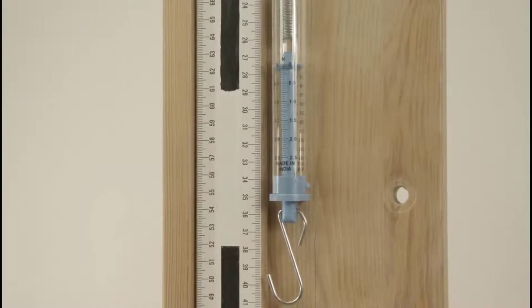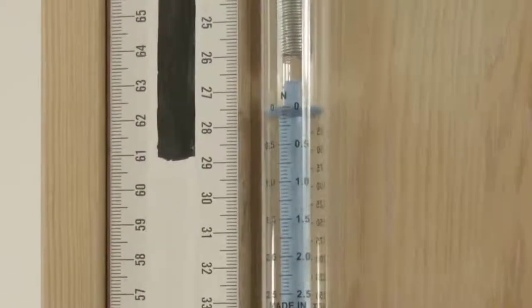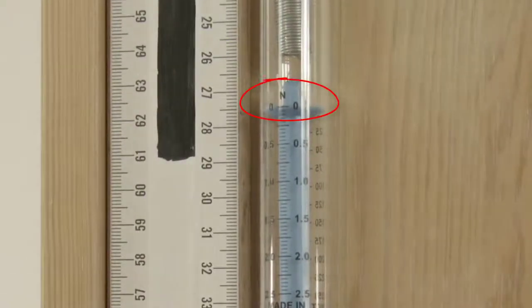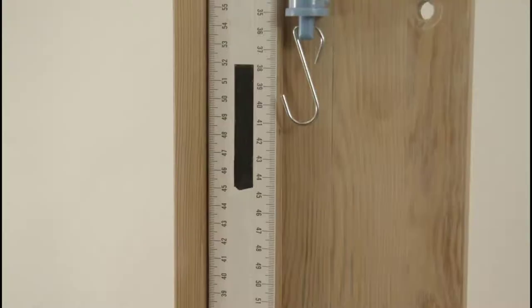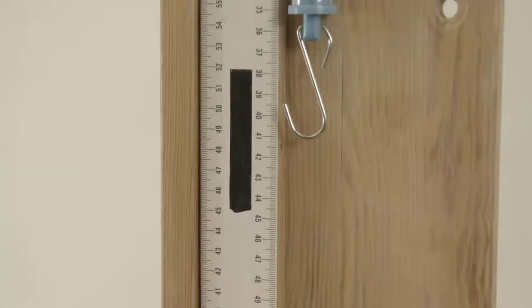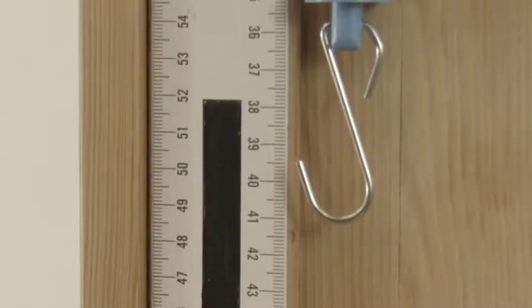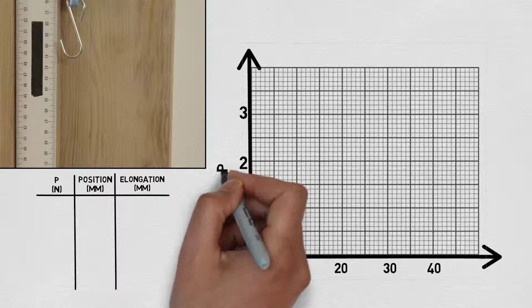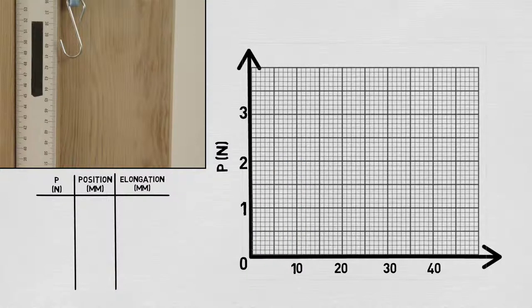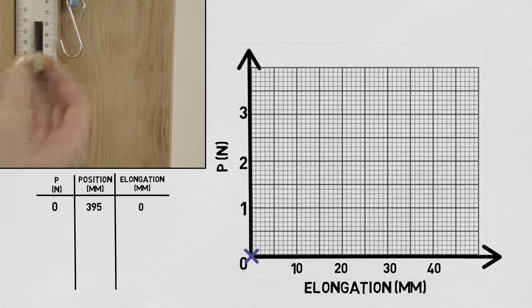The first thing to do is have a measurement we can compare our deformation data points to. As you can see, the scale reads 0 newtons, so there's no weight on it yet. Therefore, I'll take a quick first measurement of where the top of the hook falls on the ruler. It is at 395 millimeters, which is now our baseline measurement. I'll plot our data points as we go so we can see how the data evolves with load p on the vertical axis and spring elongation x on the horizontal axis.